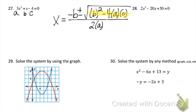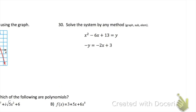Problem 29 asks you to solve the system by using the graph. The way we solve systems graphically is by seeing where they intersect — that would be here and here. Write down those two points of intersection. Make note that your x-axis and y-axis are both going by twos here.